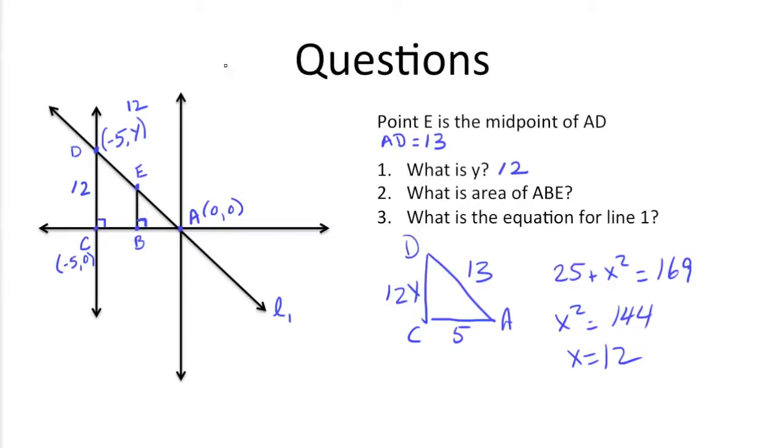So next up we need to figure out ABE. So the area of ABE would be 1 half base, which is AB, times height, which is BE. We know E is at the midpoint of DA and we know DA is 13. So if we know that DA is 13, we know that AE has to be 6 and a half.